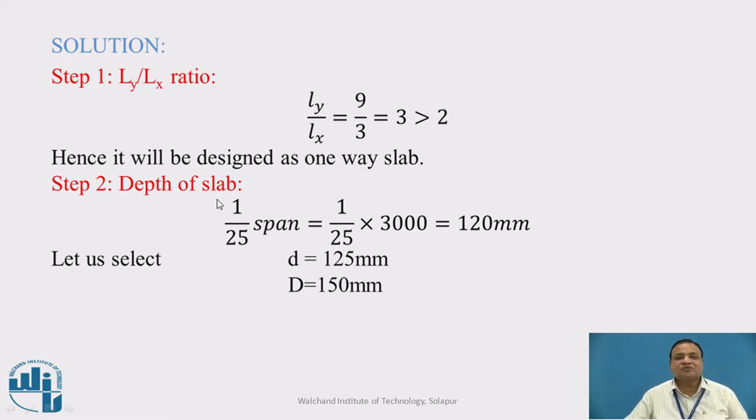Step 2: Depth of the slab. The effective depth of the slab we assume between L_x/22 to L_x/28, but I will take L_x/25 of the span. It is equal to 1/25 times 3000, which equals 120 mm. I will assume effective depth as 125 mm. I will assume a clear cover of 20 mm, and the diameter of the bar is 10 mm. The overall depth D works out to be 150 mm.